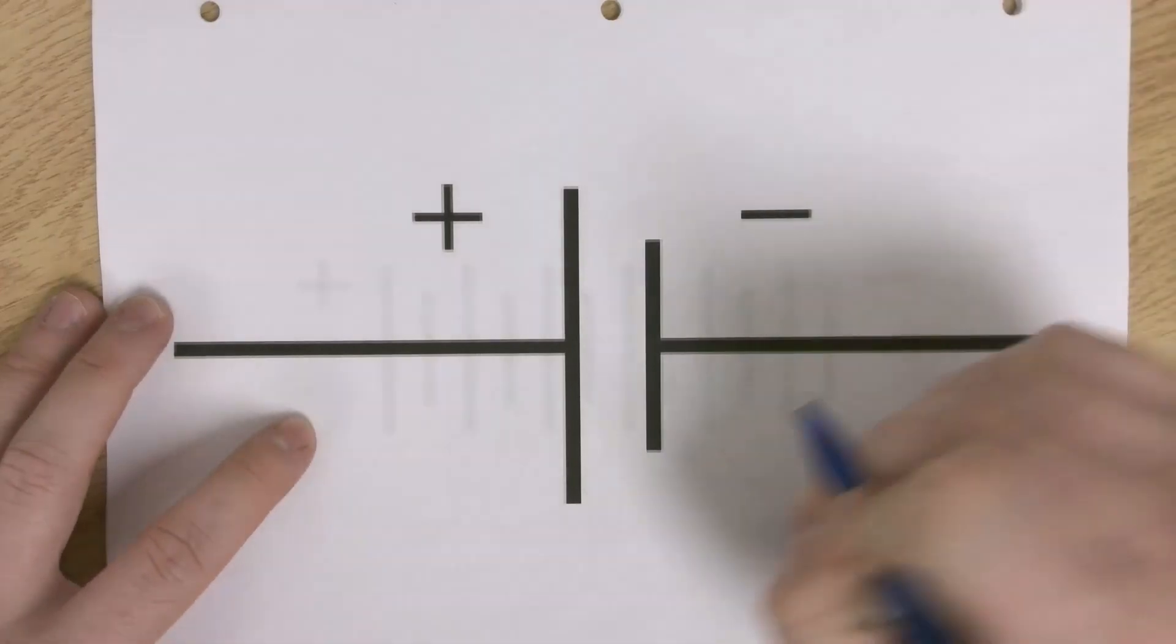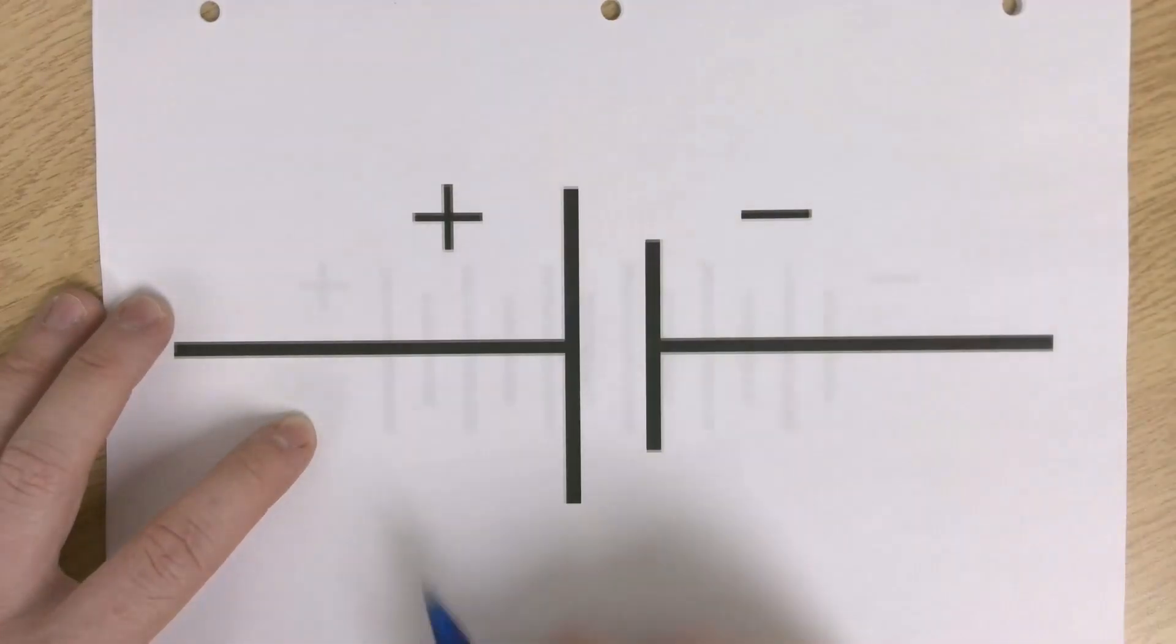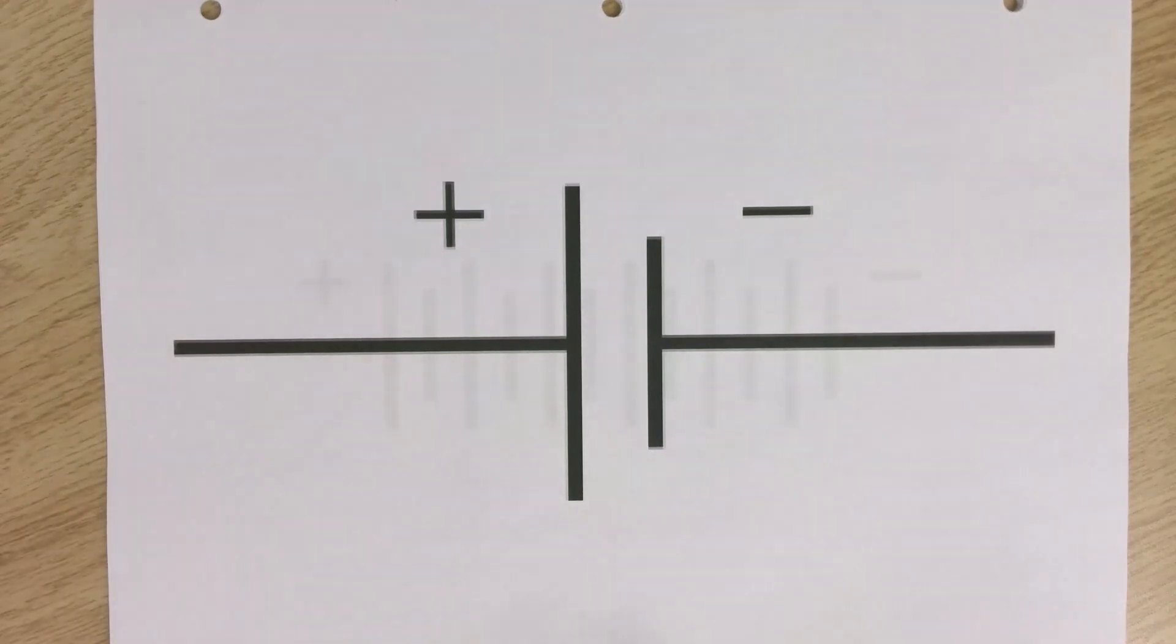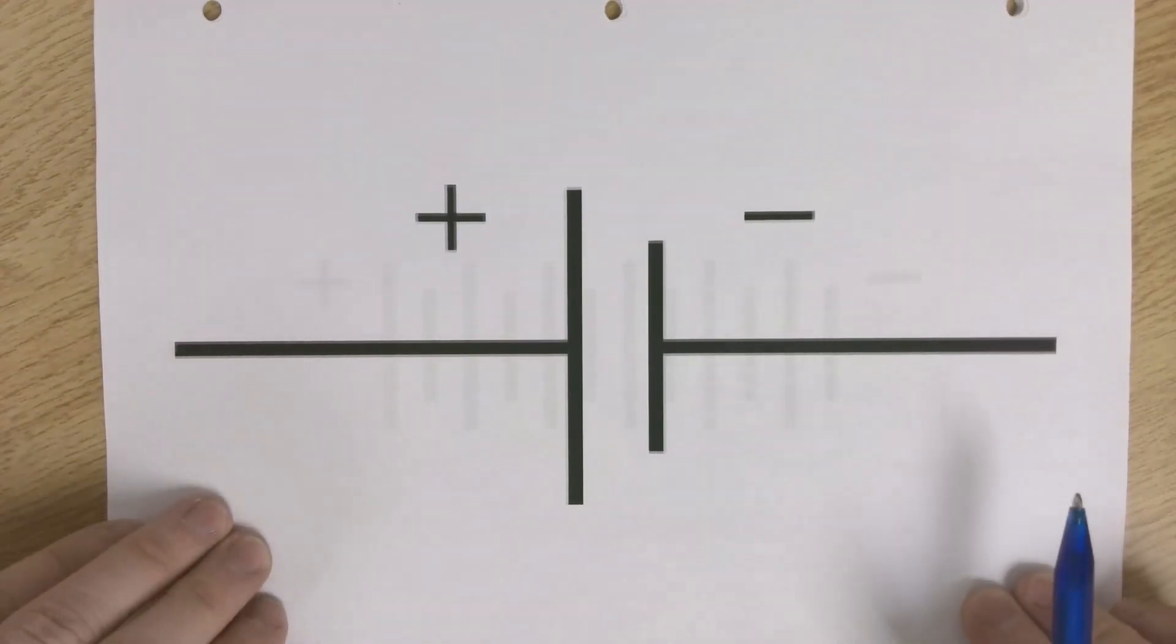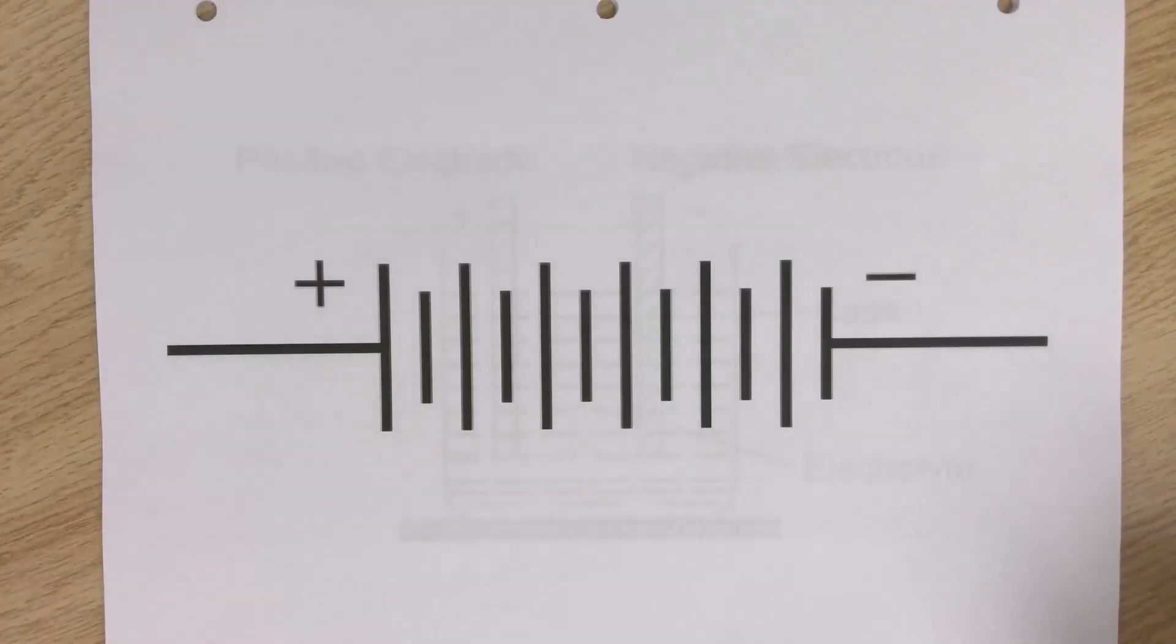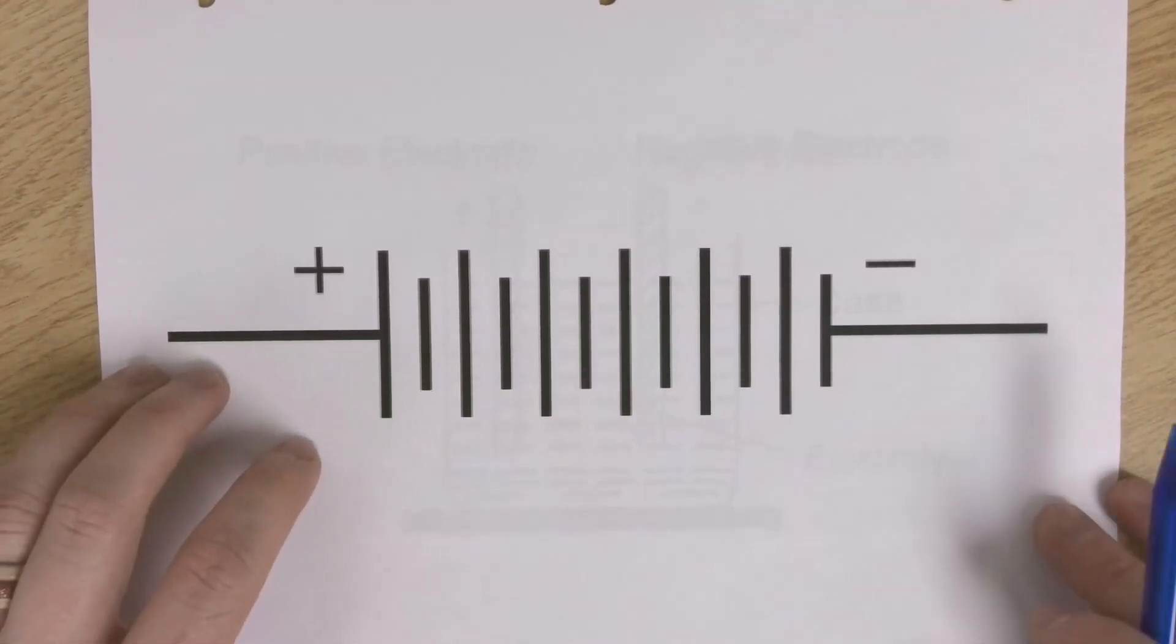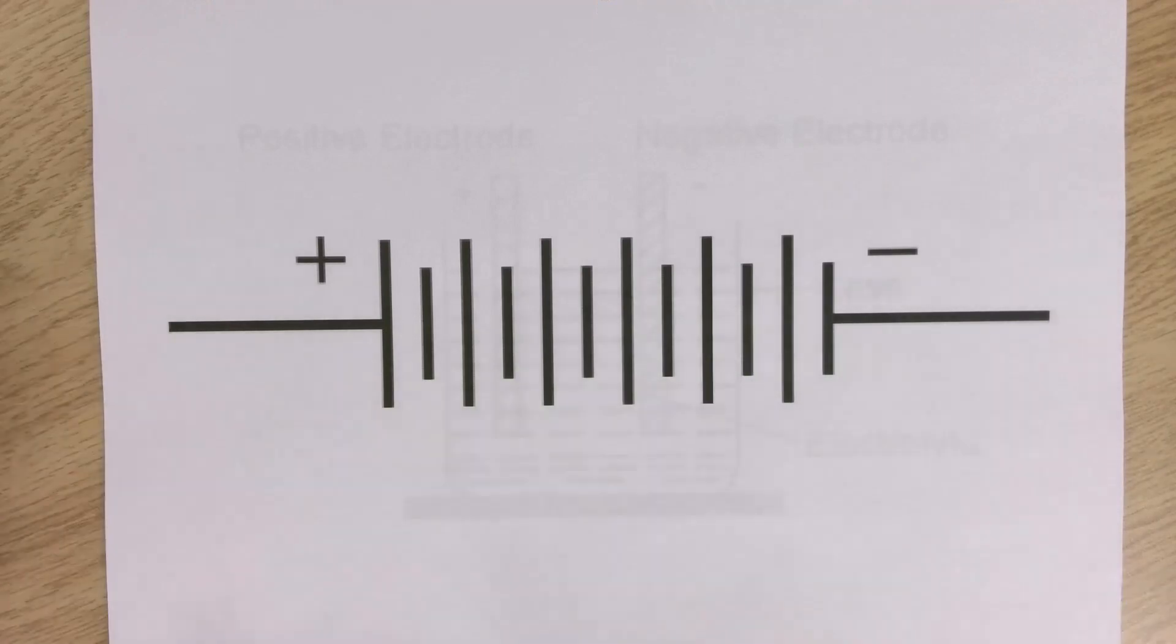We also call this picture getting down to the cellular level. Bad puns aside, pretty simple. Short line, long line, short line is for the negative side of the cell. When we put multiple cells together, we get a battery, or the schematic symbol for a battery.